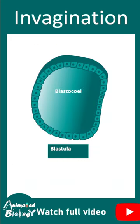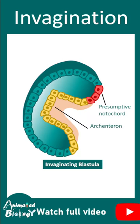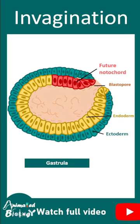During sea urchin development, the blastula invaginates and forms the archenteron cavity. Eventually gastrulation happens and different germ layers are formed.